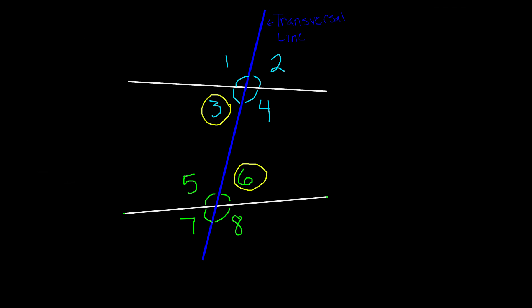In the same way, angles 4 and 5 are also alternate interior angles because they're inside the two lines and they're opposite. So, these are alternate interior angles.